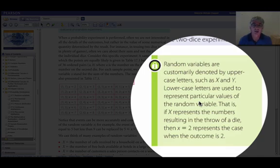So it could be the height of giraffes, and we call that big X is the height, that's our variable. The values that it can take, we call little x.